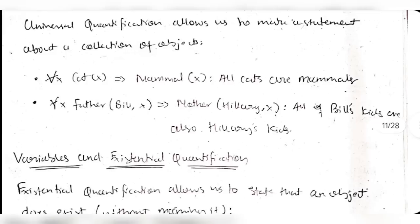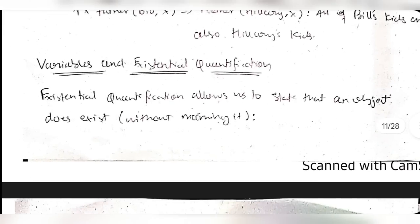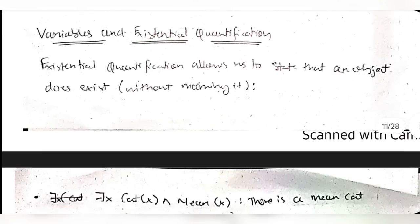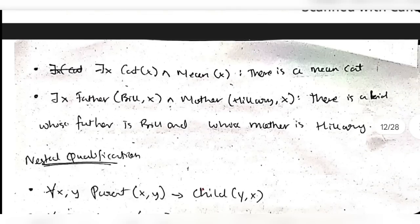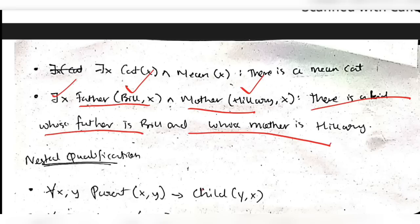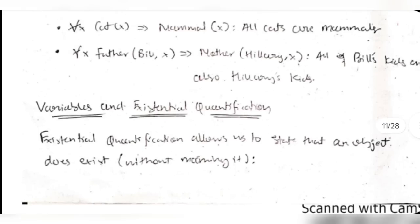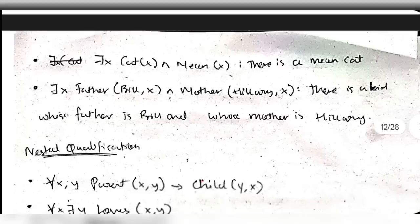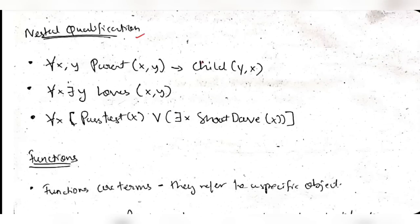Existential quantification means at least one should exist. For example: ∃x cat(x) ∧ mean(x) means 'there exists at least one cat which is mean.' Another example: there exists one person who is the father of x named Bill, and one person who is the mother of x which is Hillary - meaning there is a kid whose father is Bill and mother is Hillary.